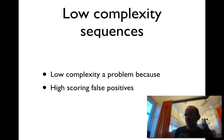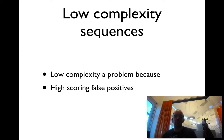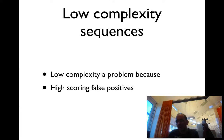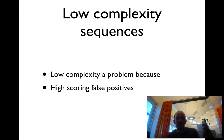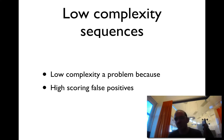Now we'll talk more about practical problems used in BLAST. One practical problem is low complexity. It's known that eukaryotic sequences contain what are called low complexity regions — very repeated regions. For instance, you can have collagen with a lot of G's and C's in it, and long stretches of identical nucleotides. These can become a problem because they do not follow the assumption that sequences are randomly distributed, so they can cause high-scoring false positives.